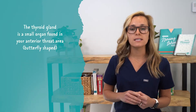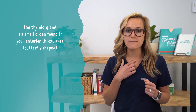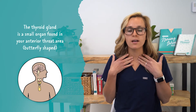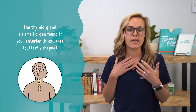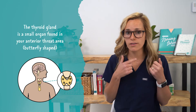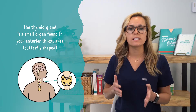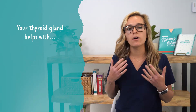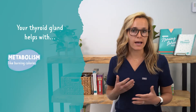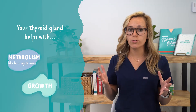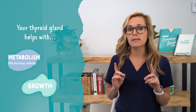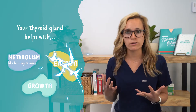Before we dive into the signs and symptoms, nursing interventions and treatments, let's look at some patho of the thyroid gland. The thyroid gland is a small organ found in the anterior throat that is butterfly shaped. Those little dots found on the thyroid are your parathyroid gland. Just like any gland, the thyroid gland has some functions — it helps with metabolism like burning calories, it helps with growth, and the thyroid gland produces hormones that give you energy.